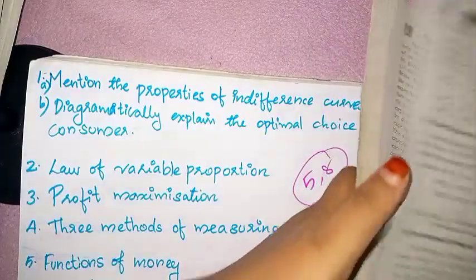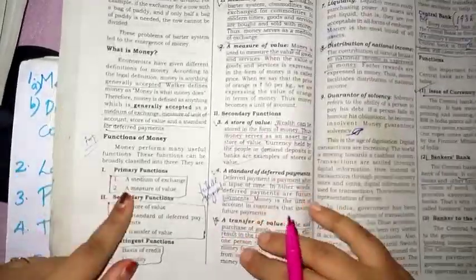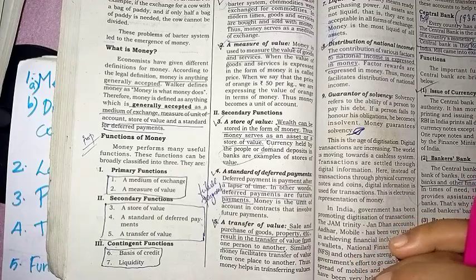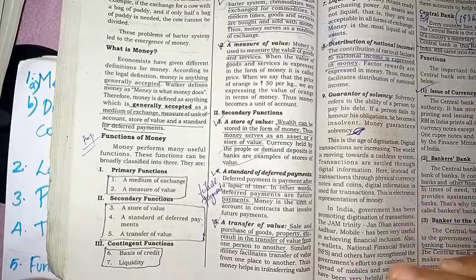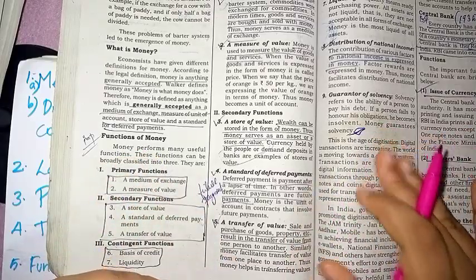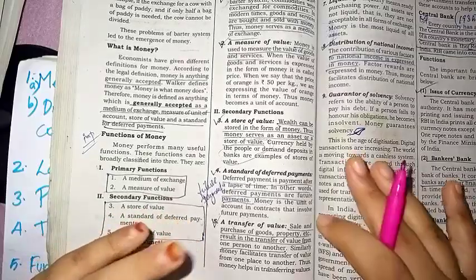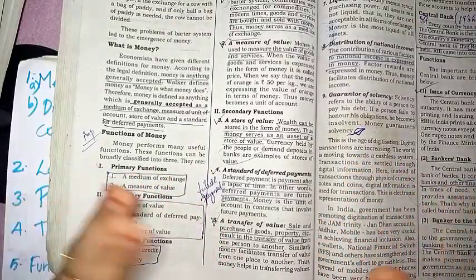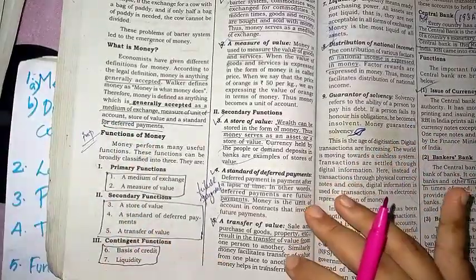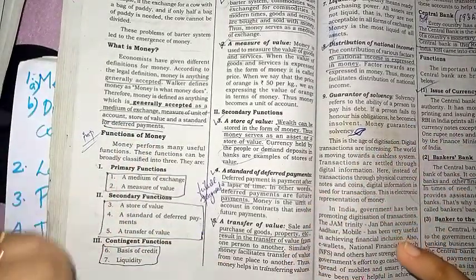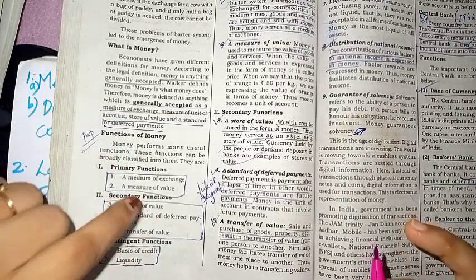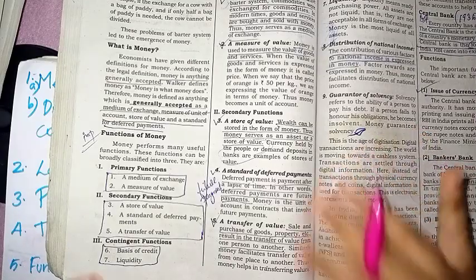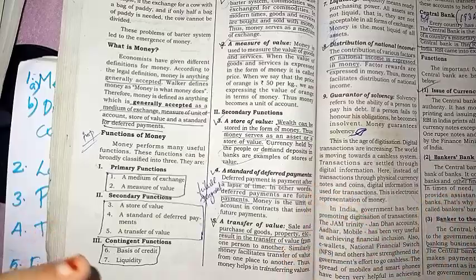Next is the expenditure method. Then we have the Functions of Money and Banking. Functions of money — how many transactions. In this case, we have money — we have cash, we had a barter system. There are three functions: Primary Functions, Secondary Functions, and Contingent Functions.